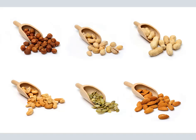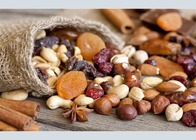A drupe is an indehiscent fruit which has an outer fleshy part consisting of the exocarp or skin, and mesocarp or flesh, which surround a single pit or stone — the endocarp — with a seed or kernel inside. In a dry drupe, the outer parts dry up and the remaining husk is part of the ovary wall or pericarp, and the hard inner wall surrounding the seed represents the inner part of the pericarp.